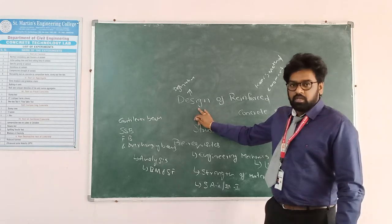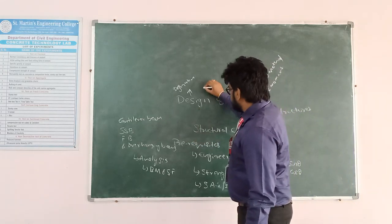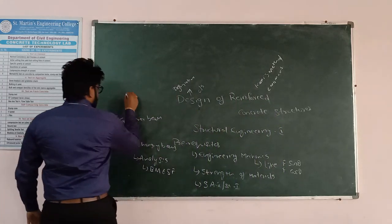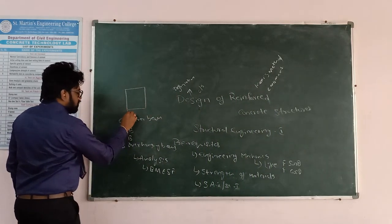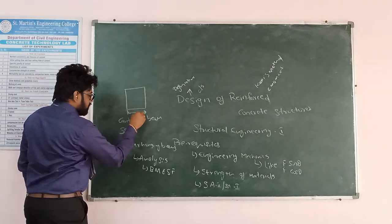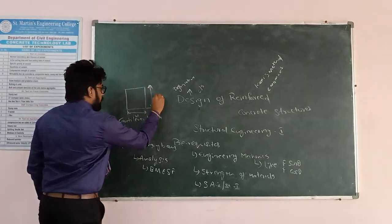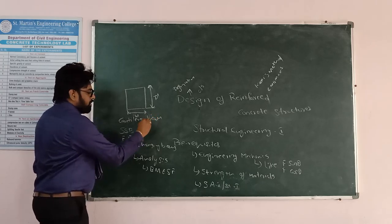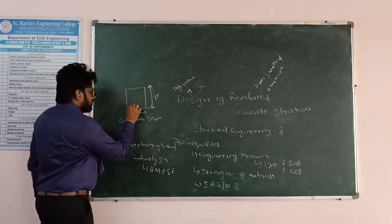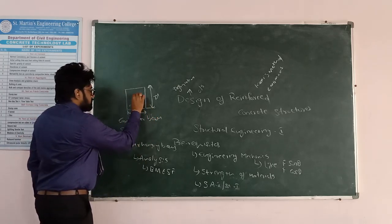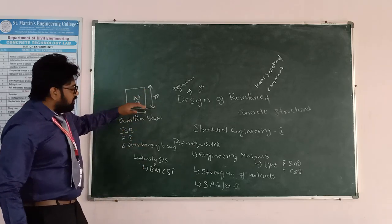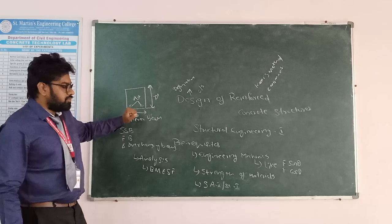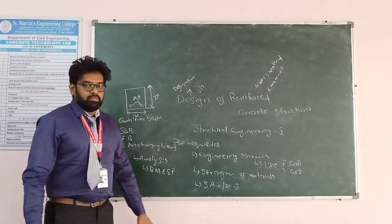Design is to determine the cross-section dimensions of the analysed structure. For example, for a beam we need to find out the width of the beam, depth of the beam, the amount of reinforcement being placed, the cross-sectional area, and the detailing of the beam.